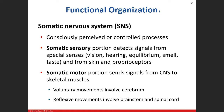With the somatic nervous system, the sensory portion is going to be things that you can consciously perceive — sight, smell, taste, touch. We just talked about proprioception, our muscle spindle and the Golgi tendon organ. Those are the receptors involved in body movements. Temperature from touching something warm, or when it's hot or cold outside — that'll be the somatic sensory, consciously perceived.